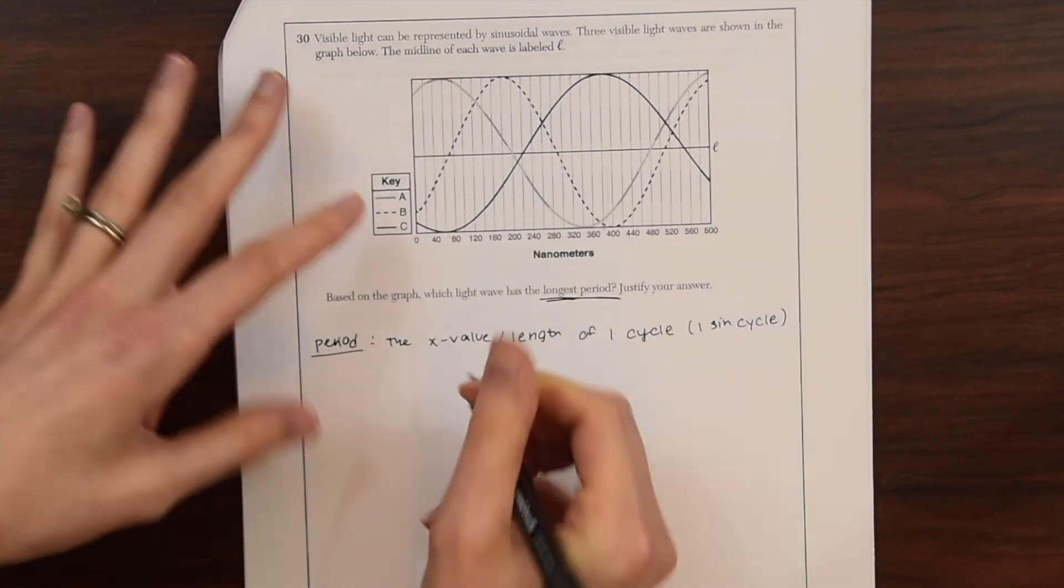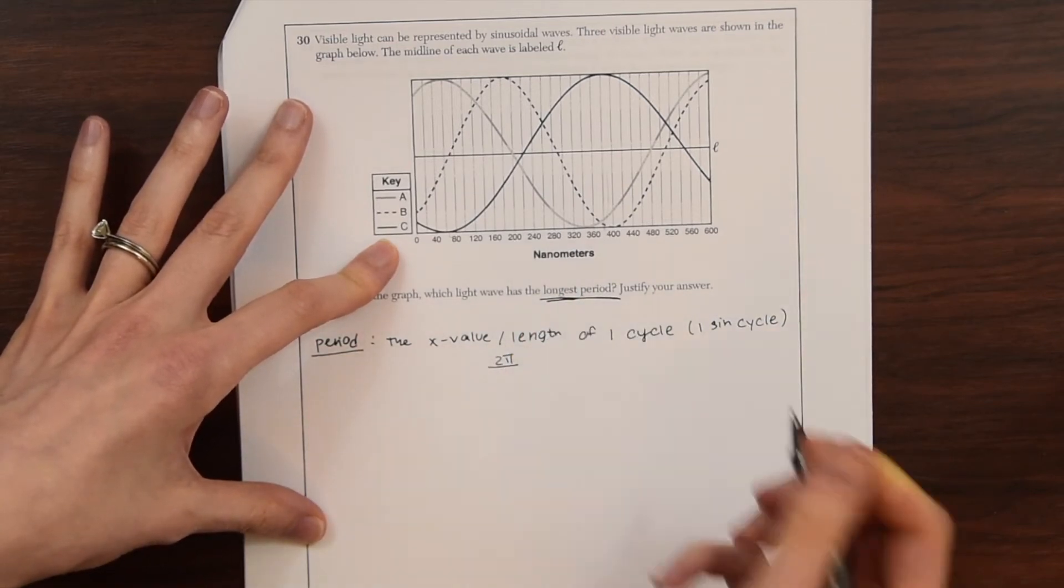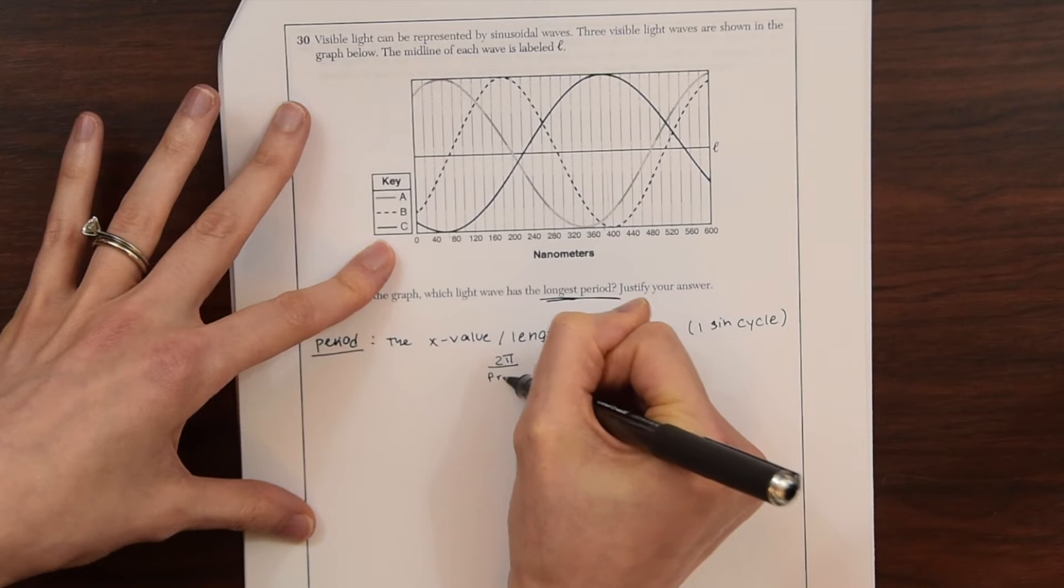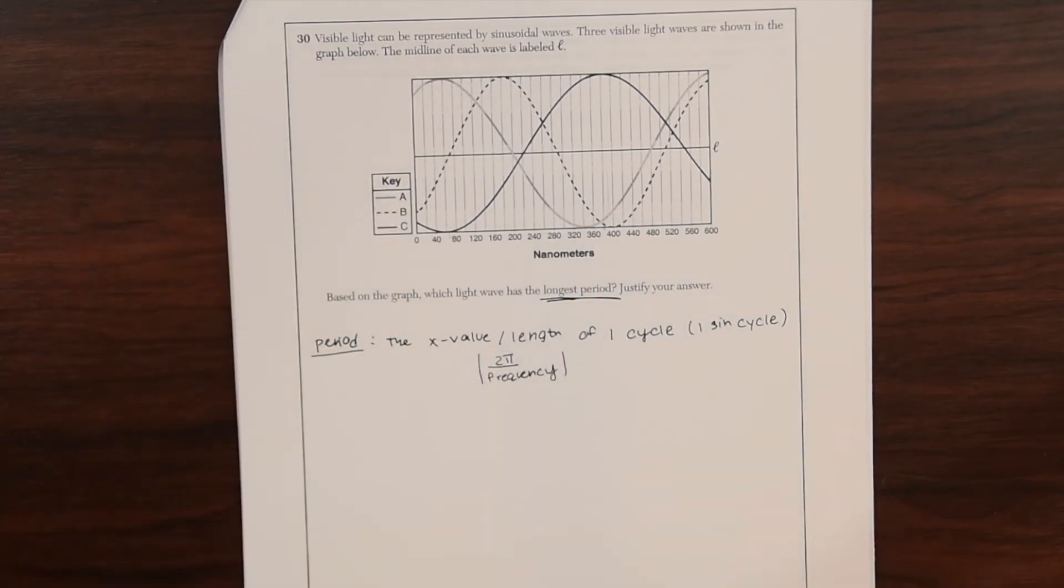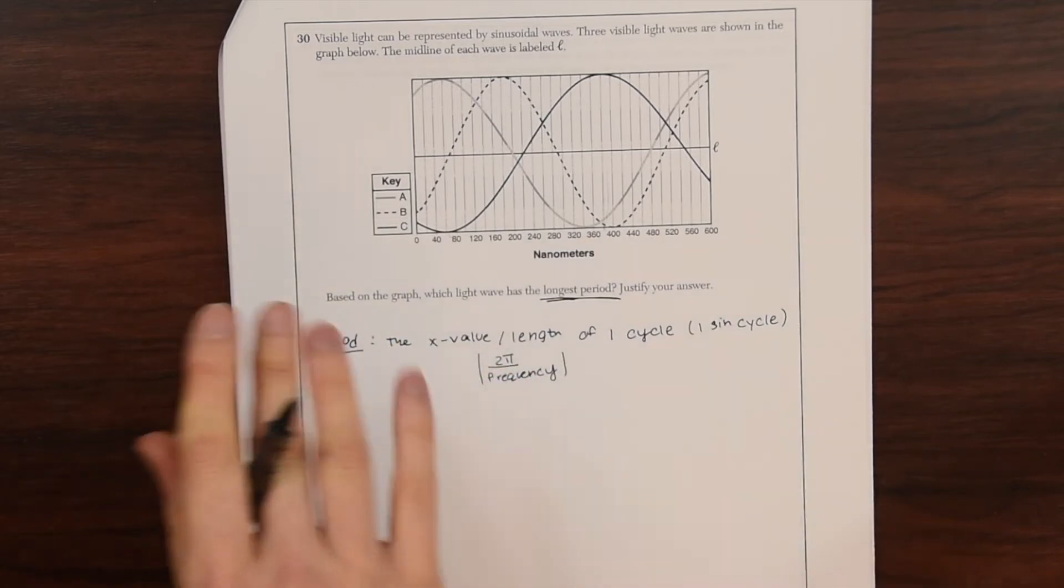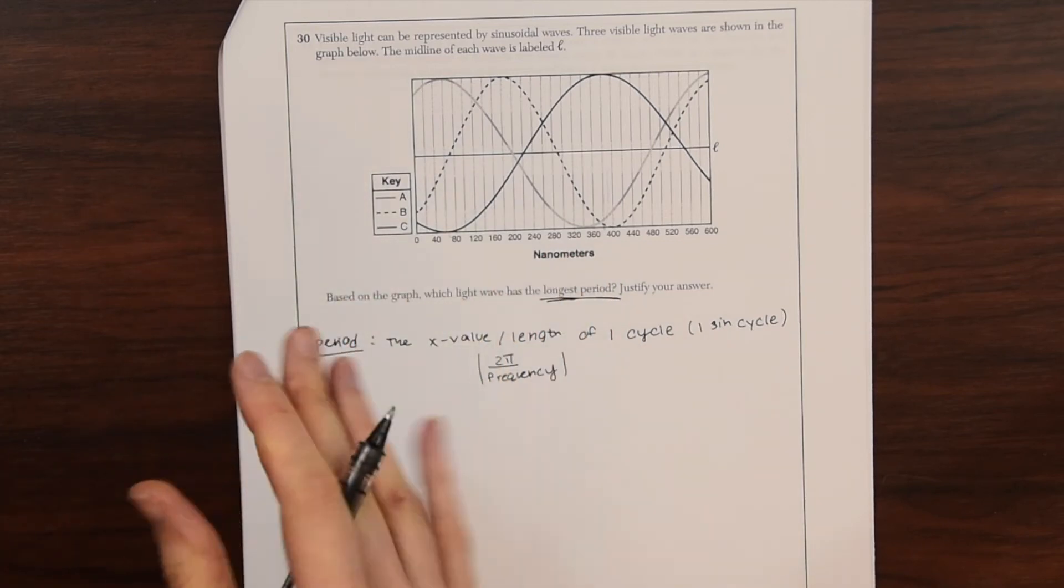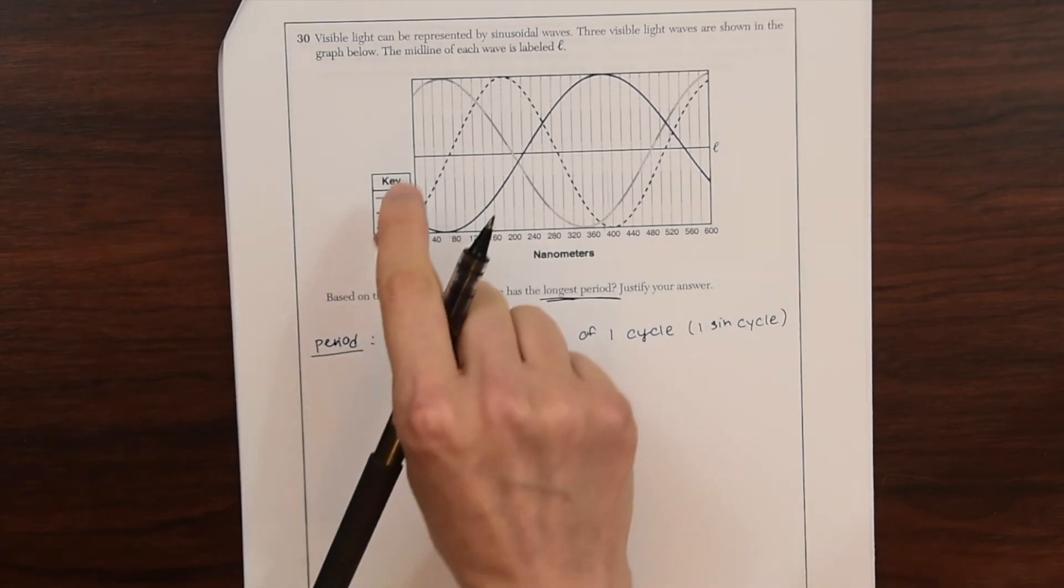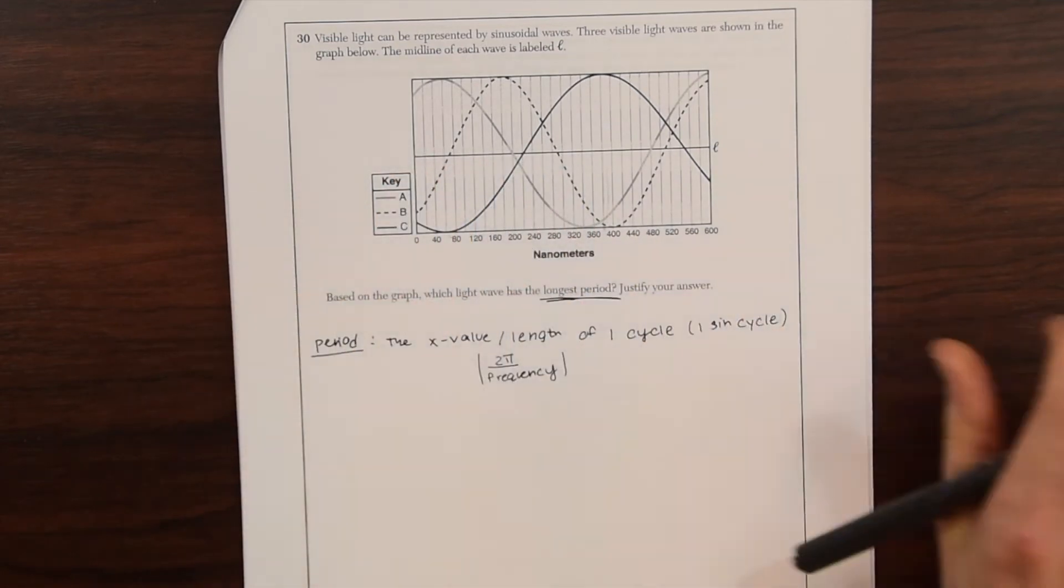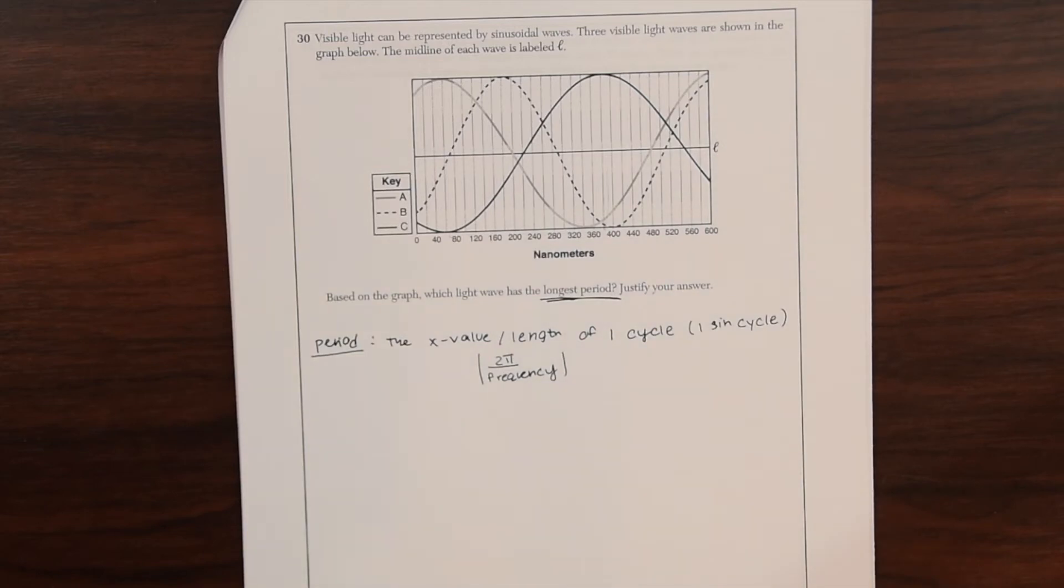And you find it usually by, it's found by doing 2 pi over the frequency. The absolute value of 2 pi over the frequency. So if we're looking for the longest length of one cycle, we want the line that has the longest length. It takes the longest amount of time for one cycle to happen.